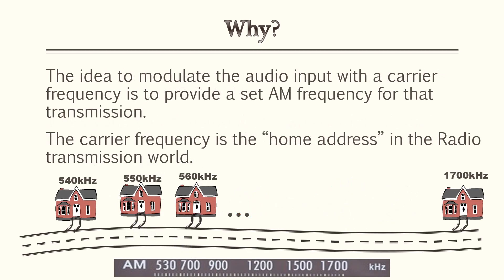The idea of modulating an audio input signal with a carrier frequency is to provide a designated AM frequency for each transmission. Think of it like this: the carrier frequency is the home address on a long street — we'll call it AM Way. Each house has a carrier frequency in the kilohertz range, starting at 540 and going up to 1700 kilohertz, incremented by roughly 10 kilohertz. To send an audio signal to a particular house, you use the proper carrier frequency.